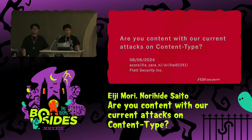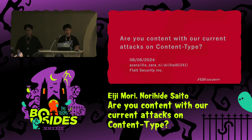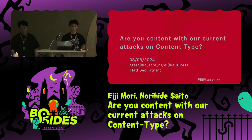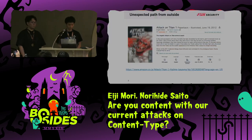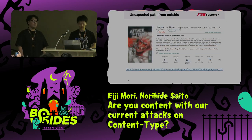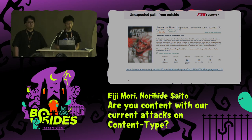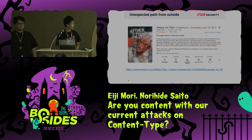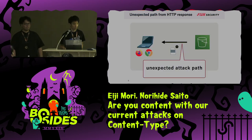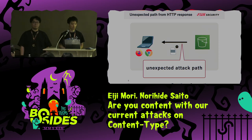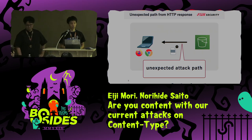Hello, everyone. Are you content with the current methods of content type attacks? We'd like to talk about a new attack vector for browsers using the content type. If an unexpected path exists for danger to enter your protected area, what do you do? Perhaps, like Attack on Titan, we discovered an unexpected attack vector in browsers. This attack path can lead to several vulnerabilities, a big one being XSS.